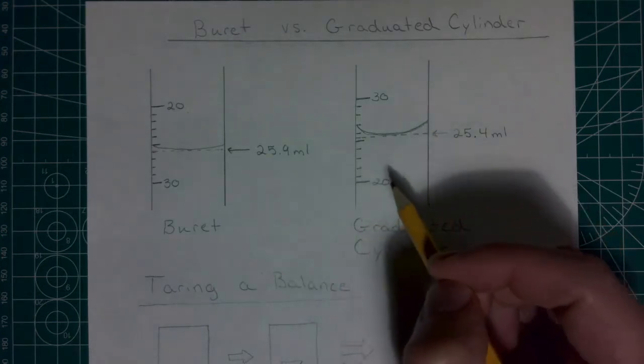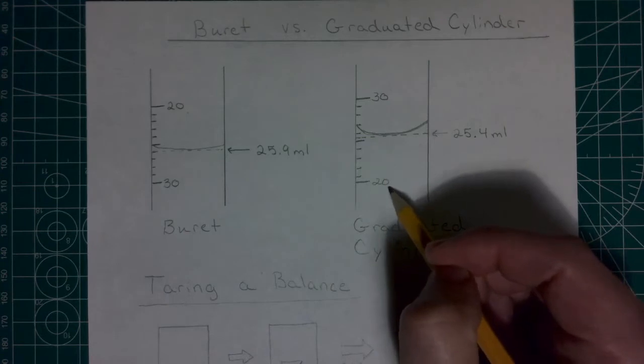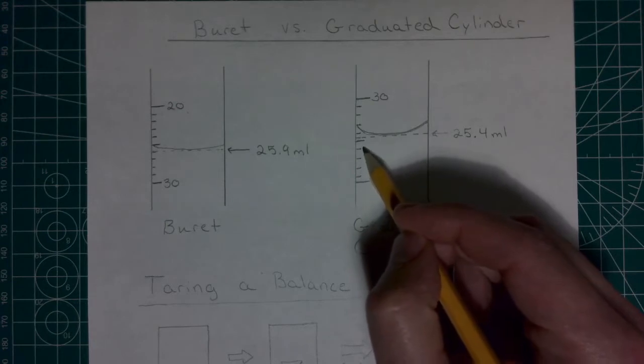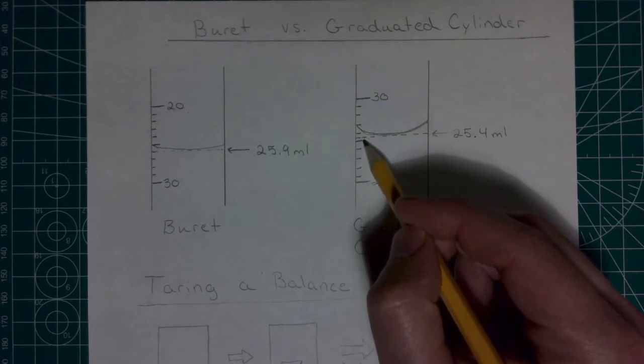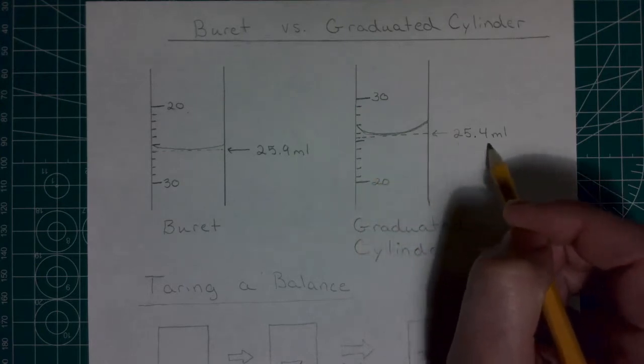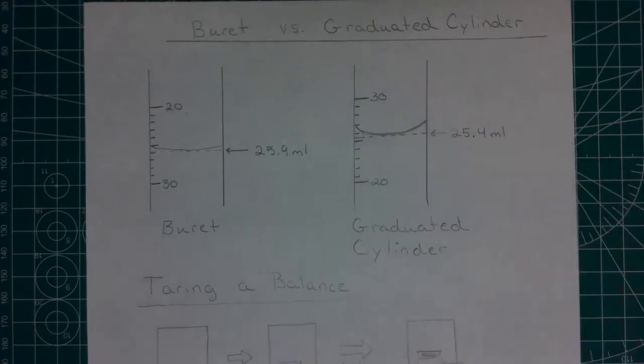Here, we're going to do, starting from the bottom, our lowest value, we're going to go up 21, 22, 23, 24, 25, and then I think maybe it's like a little less than halfway, so I'm going to call that 25.4 milliliters in that case.